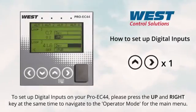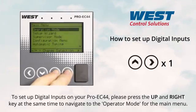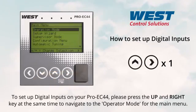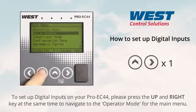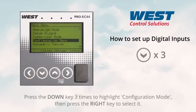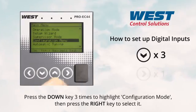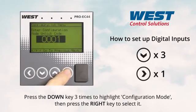To set up digital inputs on your ProEC44, press the up and right key at the same time to navigate to the operator mode for the main menu. Press the down key three times to highlight configuration mode, then press the right key to select it.